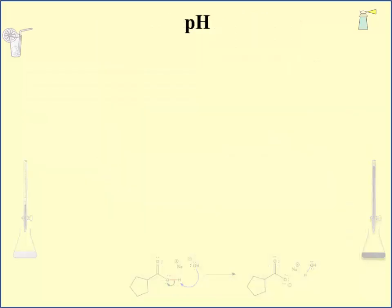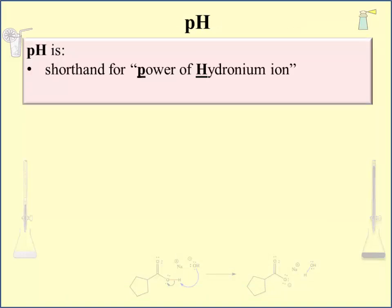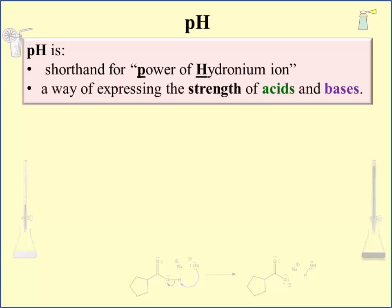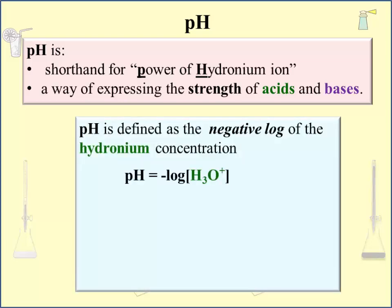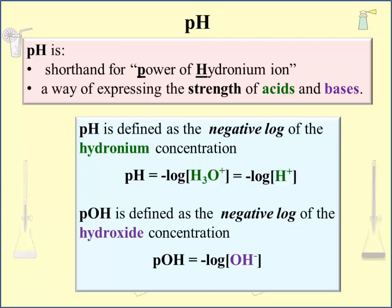pH is short for "power of hydronium ion." It is also a way of expressing the strength of acids and bases. pH is defined as the negative log of the hydronium concentration; the negative log of the hydrogen ion concentration is more commonly used — either will do. The log allows a huge range of numbers to be expressed over a reasonable scale. pOH is defined as the negative log of the hydroxide concentration. pOH is rarely used, but it is a complement of pH and will factor into our understanding of the subject.